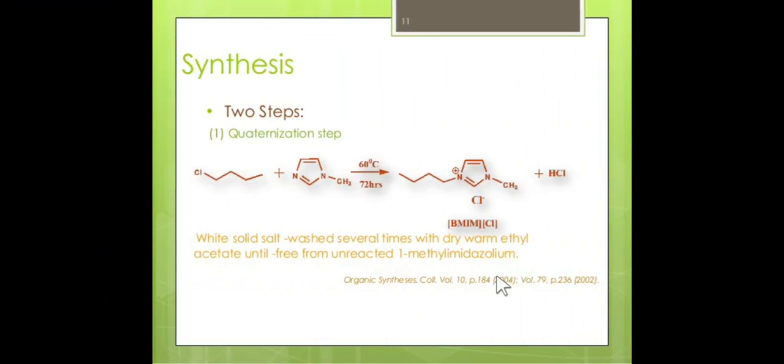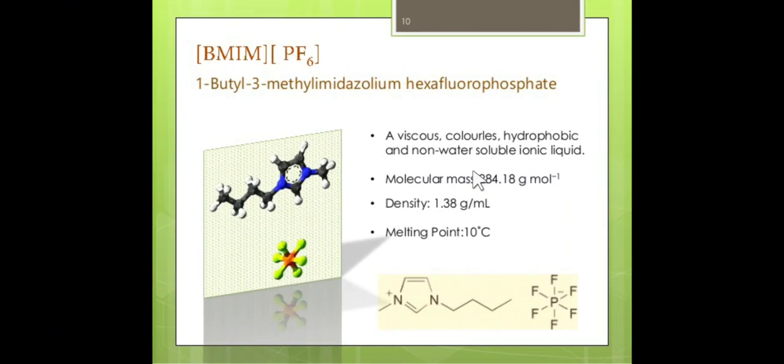Typically you can see here this is the long alkyl chain or alkyl halide which is reacted with imidazole, that is 1-methylimidazole. This reaction typically takes almost 72 hours to get this kind of ionic liquid. The name of this ionic liquid is 1-butyl-3-methylimidazolium hexafluorophosphate or chloride. Instead of phosphate, you can use chloride.